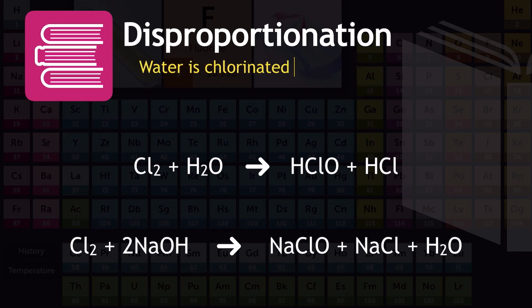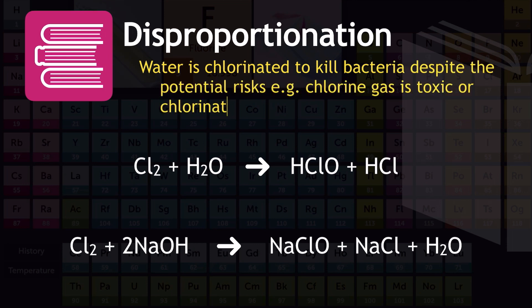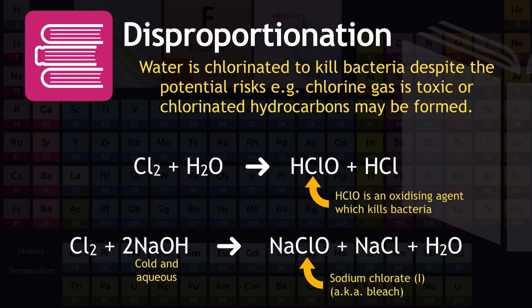So what's the application of this? Water is often chlorinated to kill bacteria despite the potential risks. If we consider the same reaction equations in this context, when we produce the HClO, when chlorine is added to water, the HClO is an oxidizing agent which kills bacteria. When we add chlorine to the sodium hydroxide in cold and aqueous conditions, sodium chlorate 1 is formed, which is also given the household name of bleach. That's because it contains the ClO- ion, which is the chlorate 1 ion, which again is an oxidizing agent.